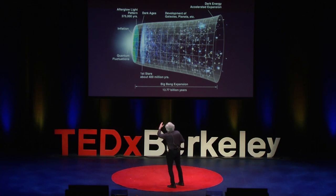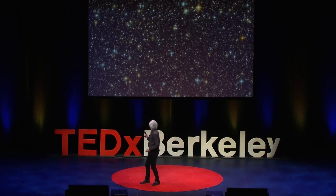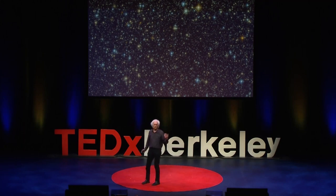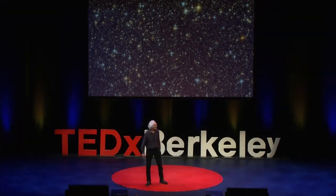Right away, the universe spreads out and develops into galaxies a billion years later. The number of galaxies we've counted so far are two trillion. Every galaxy has around 100 billion stars. There are two trillion galaxies, each one with a hundred billion stars.